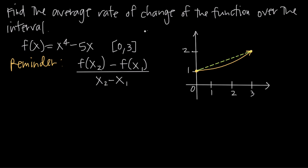When we're talking about the interval 0 to 3, we're referring to this interval from x equals 0 to x equals 3 — between these lines here. What we want to do is figure out how fast the function increases on average. The way that we do that is we use this formula here — we'll come back to this formula in a second. Basically, all we do is look at the function's value at the endpoints of the interval.